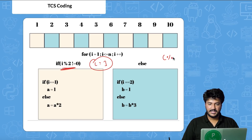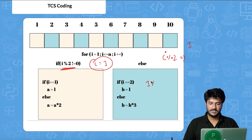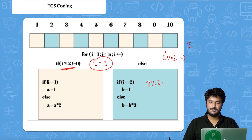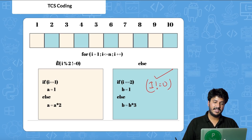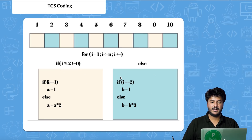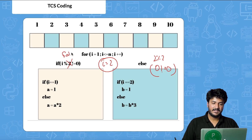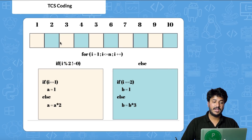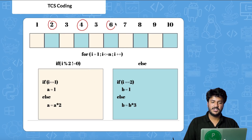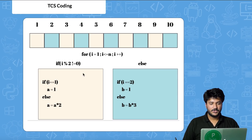The '%' operator gives you the remainder. So 1 % 2 = 1, which is not equal to 0, so the if condition is true for odd positions. When i = 2, 2 % 2 = 0, so the if condition fails and it goes to else. This way, for all odd positions the code goes into the if block, and for all even positions into the else block.